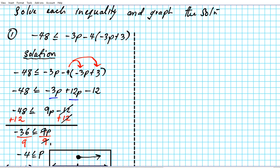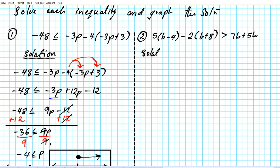Let's take a look at question number two. We have the inequality: 5 times the quantity (b − 4) minus 2 times the quantity (b + 8) is greater than 7b + 5b. The key thing to notice is that we have multiple parentheses. The goal is to simplify first — we want to eliminate the two sets of parentheses by distributing.